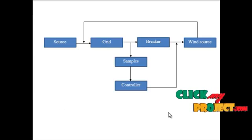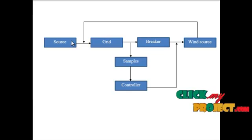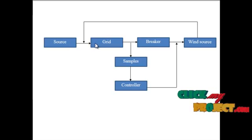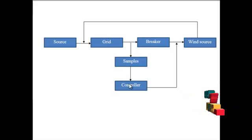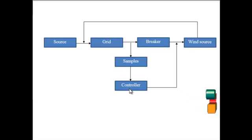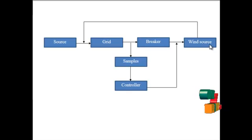Now we are going to see our flow diagram. It is the flow diagram of our proposed work. The source will be the 3-phase grid. Here the 3-phase AC source will be generated by any other source in real time, and that will be given to the grid. The grid will take samples and pass them to the UPQC controller. Suppose the grid does not give a sufficient amount of power — then it will activate the breaker and get current from the wind source.